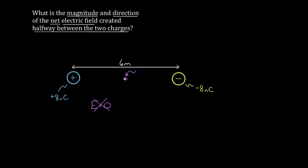First, draw the direction of each field at that point. The positive eight nanocoulomb charge creates a field that goes radially away from it, so it points to the right. When finding the field from the positive charge, pretend the negative charge doesn't exist — it still creates that field regardless. Now for the negative charge: negative charges create a field pointing radially inward, so over here that also points to the right.